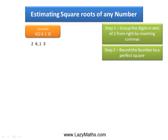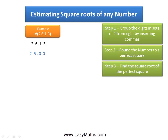The next step is to round this number to a perfect square. The closest perfect square to 2613 is 2500. The next step is to find the square root of 2500, and as we know, 2500 is a perfect square of 50. So the square root of 2500 is 50.